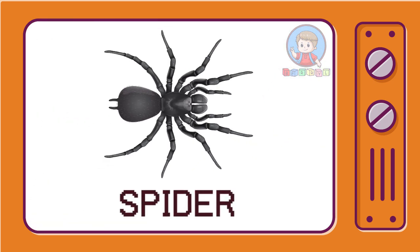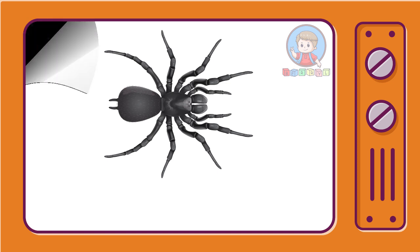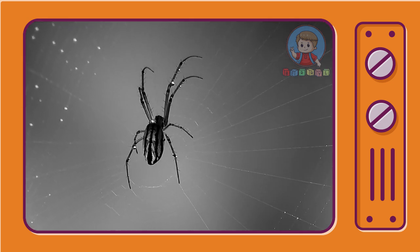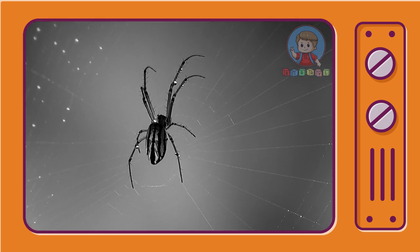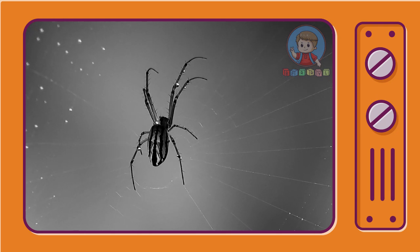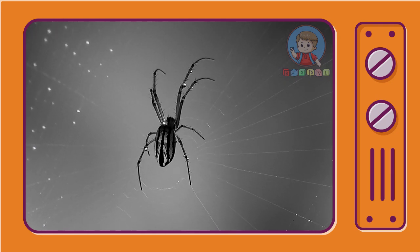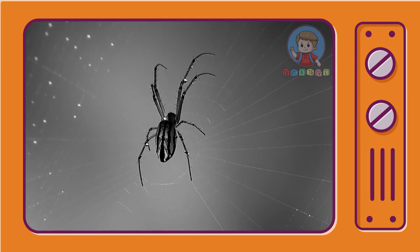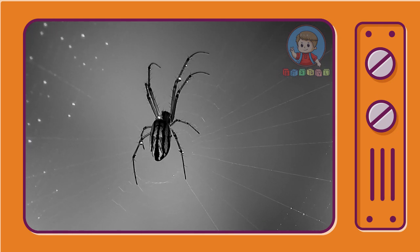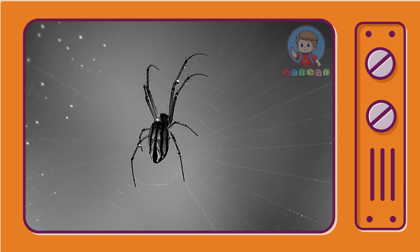Spider. Spiders are a kind of animal with two body segments, four pairs of legs, no wings, and no chewing mouth.